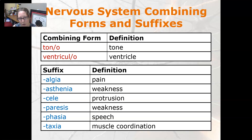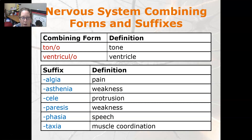For the suffixes: algia is pain, asthenia is weakness. Cele is protrusion, paresis is weakness also, phasio is speech, and taxia is muscle coordination. If you have a-taxia, you lack muscle coordination, so you're clumsy.